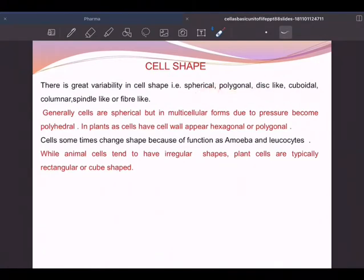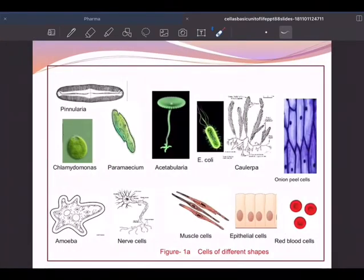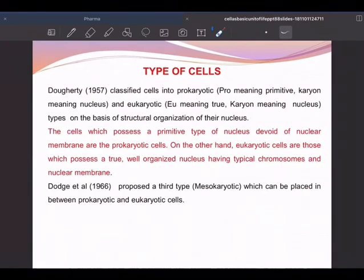Shape: there's a great variety in cell shape. Some are spherical, some are polygonal, disc-like, cuboidal, columnar, or spindle-like. Generally cells are spherical, but in multicellular forms, due to pressure, they become polyhedral. Plants have variety: hexagonal, polygonal like that. Cells change shape like in amoeba. Amoeba keeps on changing its shape. Leukocytes like that. So cell shapes also will decide. Look at the various shapes: amoeba is shapeless, neuron the longest one, muscle cell shape cylindrical, epithelial cells pillar-like, red blood cells spherical. You can see varieties of shapes of cells here.